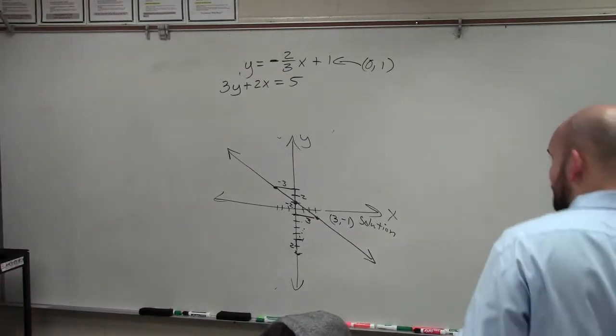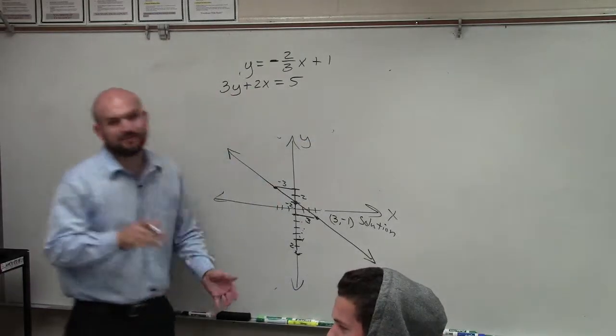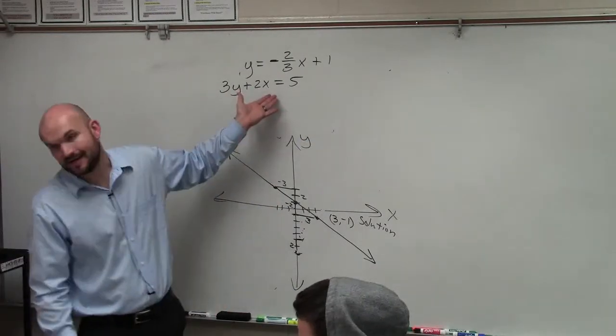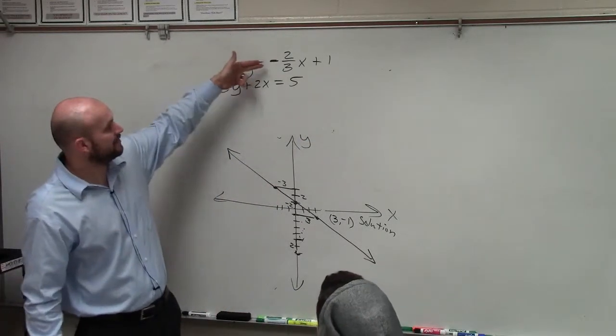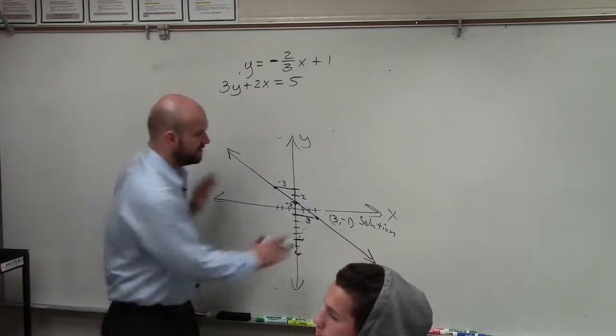All right. Now, on the next example, ladies and gentlemen, what I did is I now just added a different equation. We have y equals negative 2 thirds x plus 1, which I left the graph up here because I think we are familiar with that.